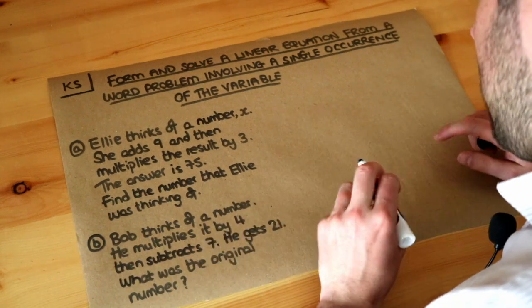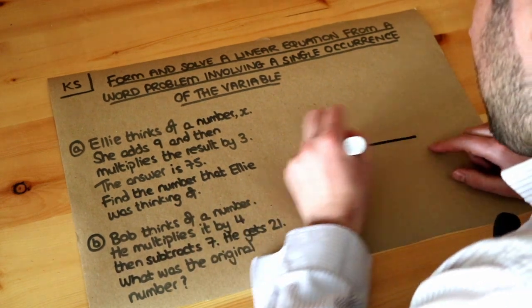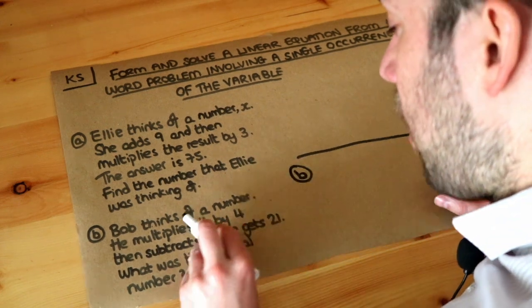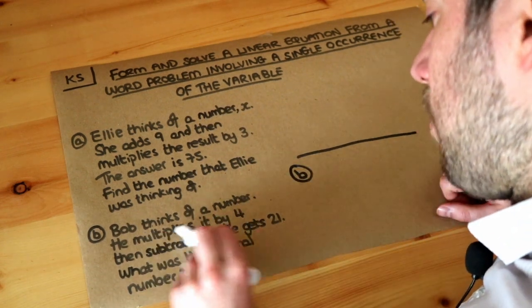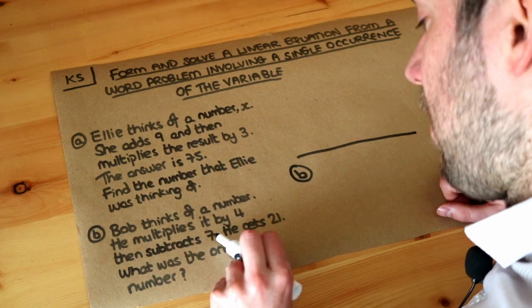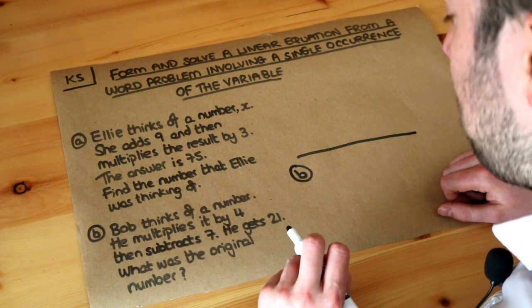I'm going to start with the second problem because it's slightly easier. Bob thinks of a number, multiplies it by four, then subtracts seven and gets 21. What was the original number?